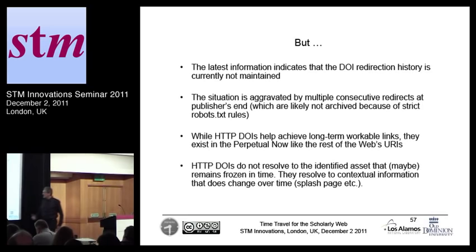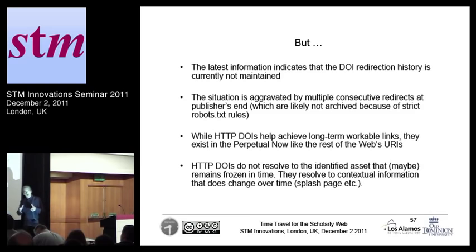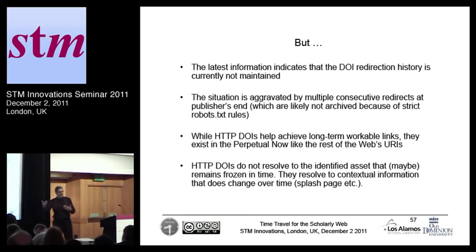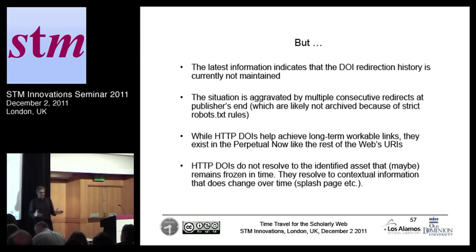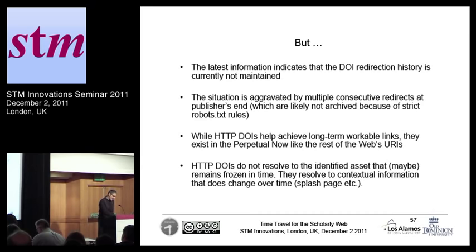Unfortunately, I checked with the people at CNRI who run the DOI resolver. The history of redirects is not available and is not being maintained. The only thing the DOI resolver knows is where it's redirecting today — not where it redirected yesterday, let alone last year. So while DOIs help make sure the link doesn't break, they are not of much help in allowing us to travel back into the past. Add to that the fact that the pages to which DOIs resolve — splash pages and all — are typically not even archived, because crawlers cannot get into them due to very restrictive robot.txt situations. So the DOI lives in the eternal now, just like the entire web, and doesn't really help in reconstructing the scholarly temporal context.